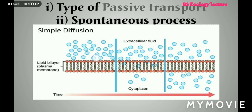Next is the diagram of simple diffusion. In this diagram you can see this is the highly concentrated area, this is the lipid bilayer, and these molecules move toward the lower concentrated area with the passage of time. This process is passive transport because no energy is required and this is a spontaneous process.